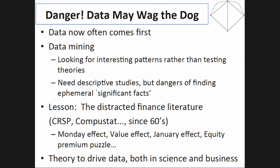One thing to say about this: we're being inundated with data, and the data can wag the dog. A lot of times now the data comes first — a student appears at the door saying 'I've got this great data set, what do I do with it?' By putting the data first and theory second, we create problems. The theory should guide us as to which questions to ask. We want to maintain the scientific method as we're faced with more data.